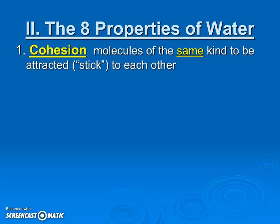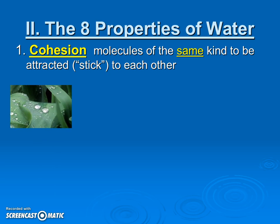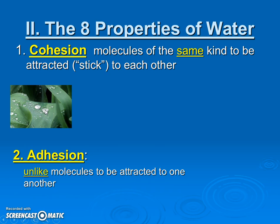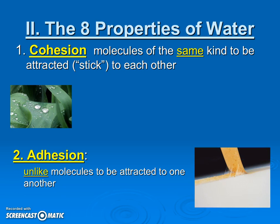Our first property is cohesion, which means molecules of the same kind are attracted to or stick to one another. This means two water molecules stick to each other, which is how they form a droplet. This is compared to the second property, adhesion, which is that water will attract to unlike molecules — like a band-aid sticking to your skin, where those are two different things.